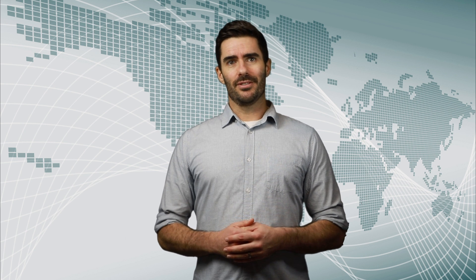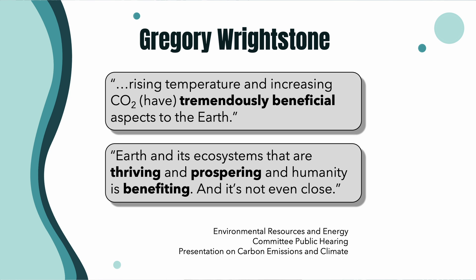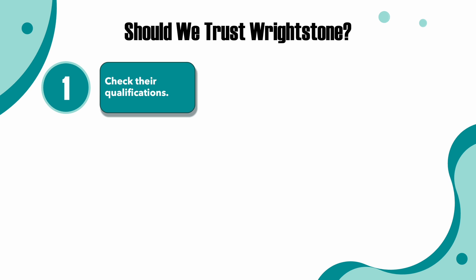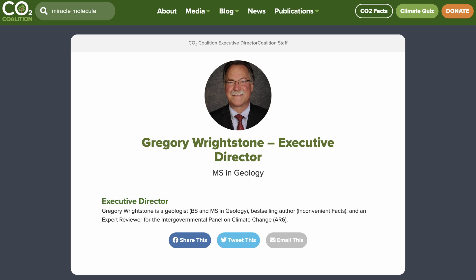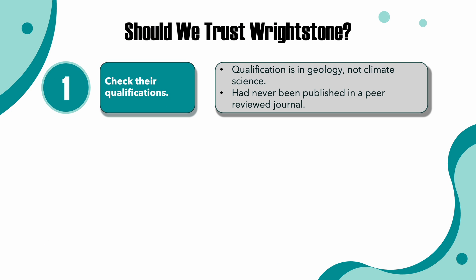So let's practice our new critical thinking skills with an example. In 2019, a committee formed by the Pennsylvania House of Representatives invited a scientist called Gregory Wrightstone to speak about climate change issues. Wrightstone's opinion was that the climate change we're currently experiencing is a natural process and is in fact good for the planet. He has a master's in science, so should we believe his opinions? A quick Google search brought me to a site called the CO2 Coalition, where he's the executive director. His qualifications are listed as a master of science in geology, which doesn't qualify him as an expert in climate science. He also acknowledged to the House committee that he had never published a paper on modern-day climate change in a peer-reviewed journal.